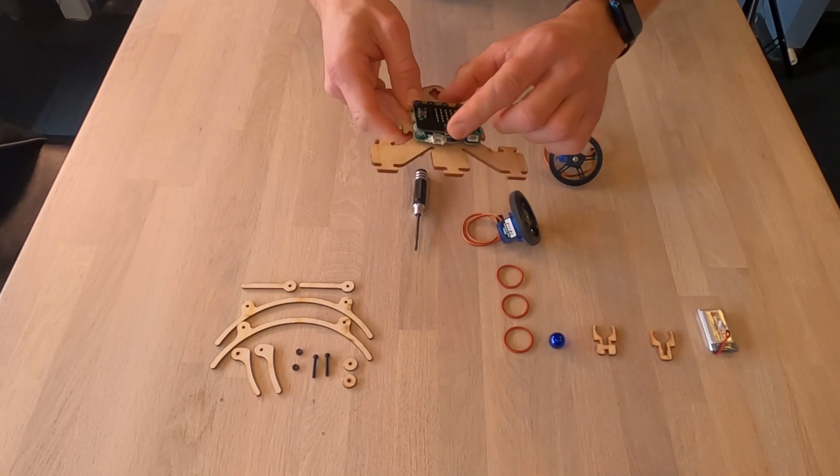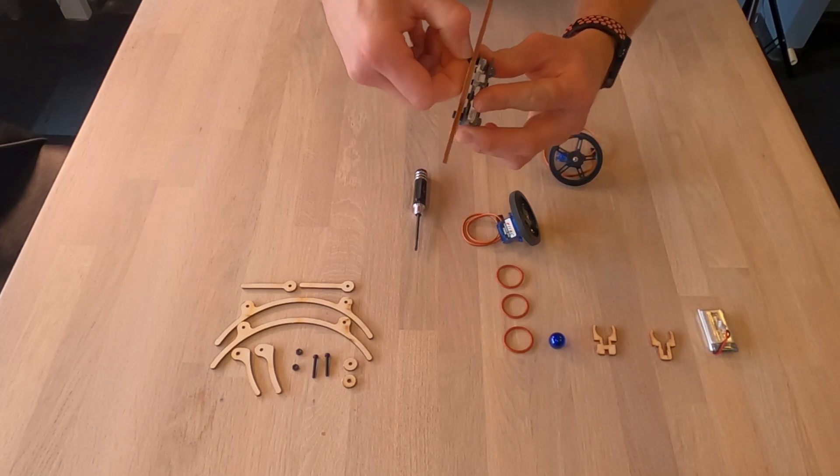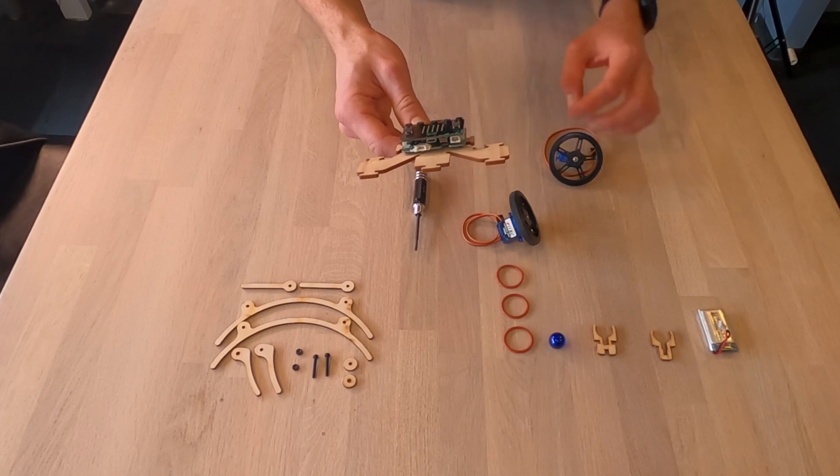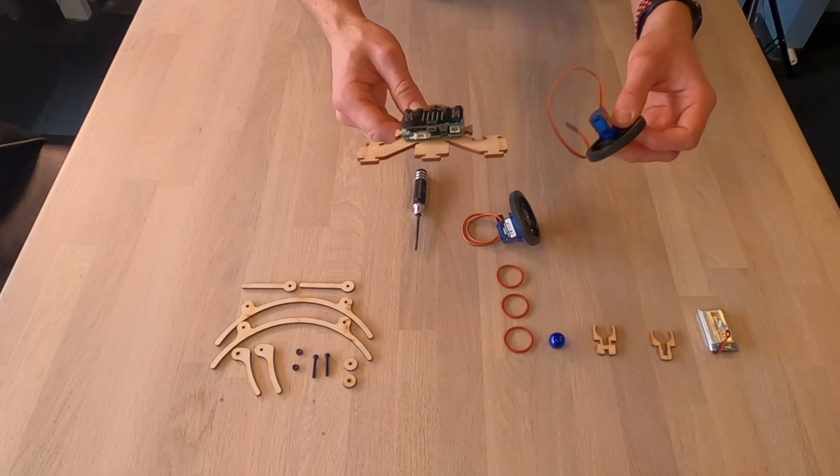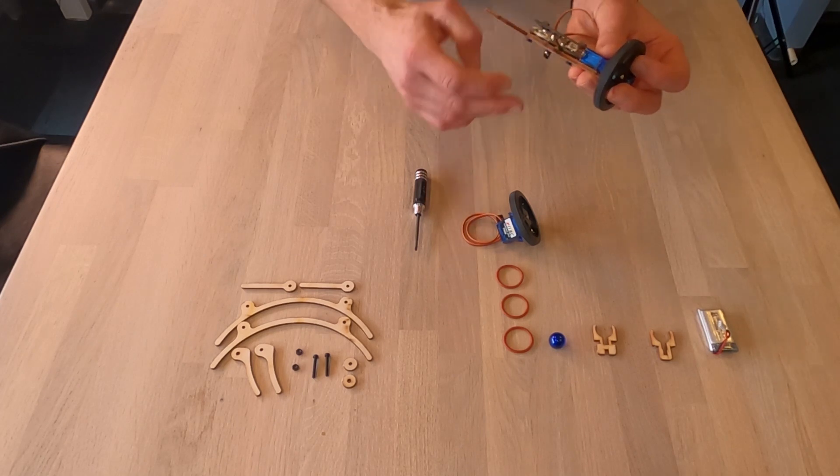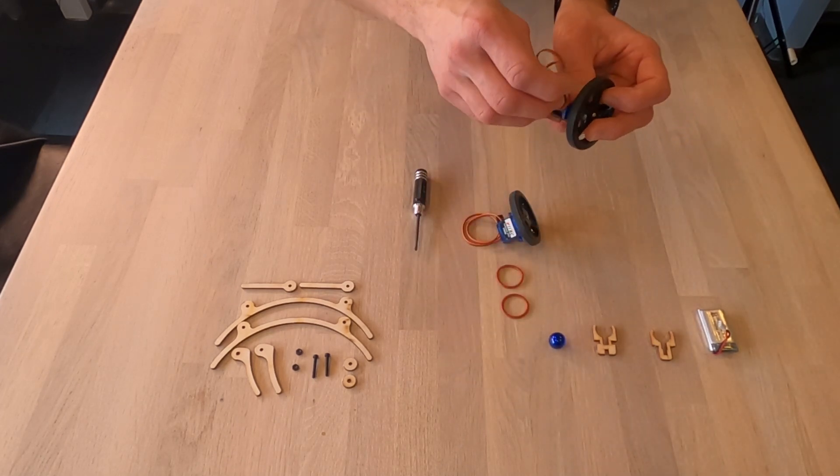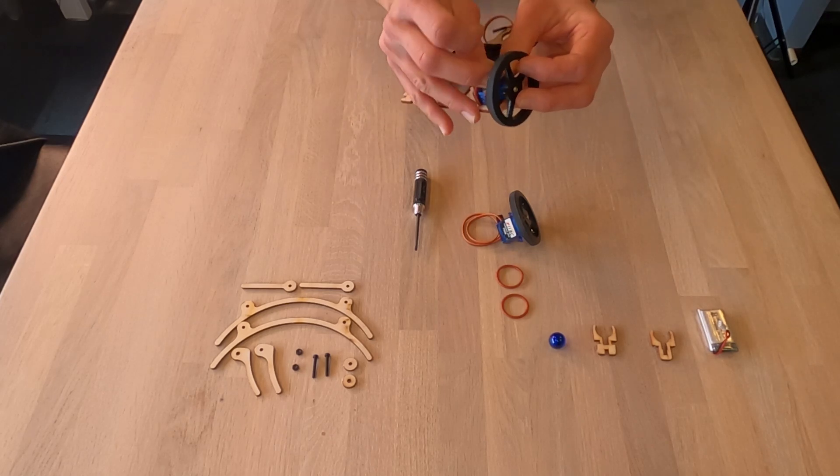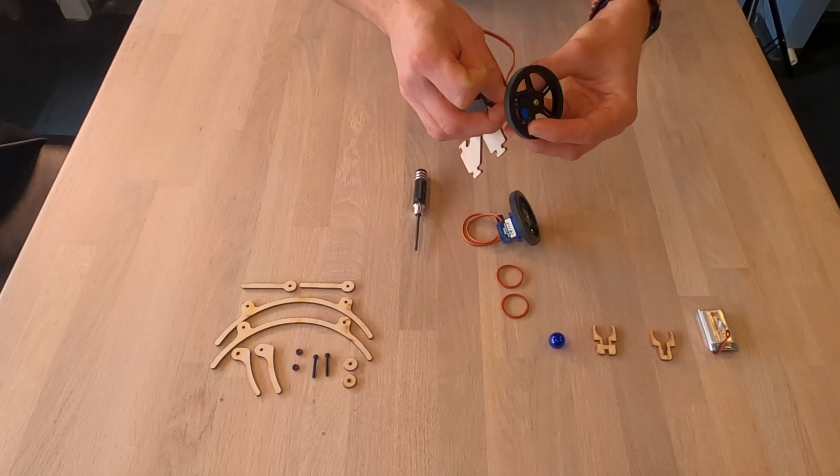So now these are firmly mounted. The next thing I'm going to do is mount the servos. When I start with this one, then I take the rubber band and move it around the servo.